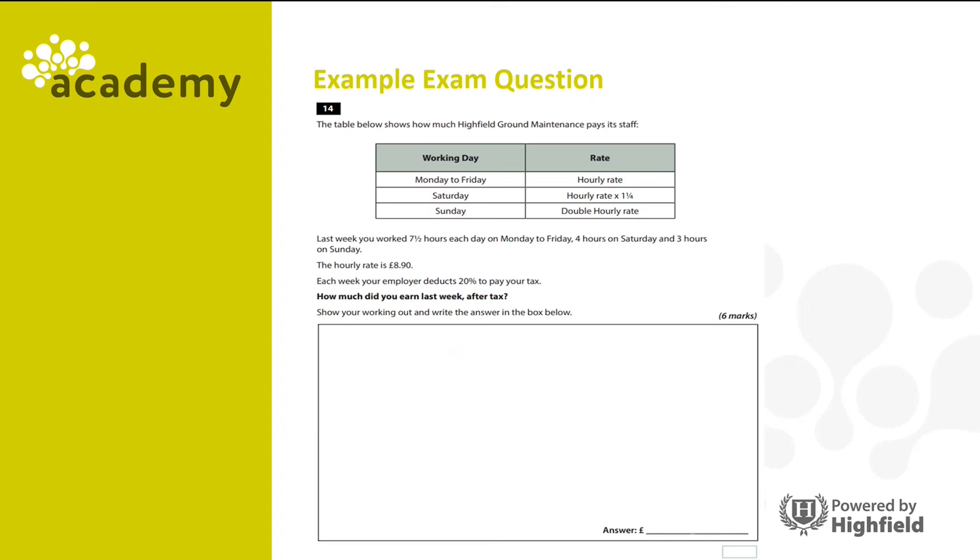Now let's look at an example question you might get on an exam. The table below shows how much Highfield Ground Maintenance pays its staff. You can see there's three different rates. Last week you worked seven and a half hours each day on Monday to Friday, four hours on Saturday and three hours on Sunday. The hourly rate is £8.90. Each week your employer deducts 20% to pay for your tax. How much did you earn last week after tax? You need to show your working out for this answer. So pause the video again, have a go at answering the question including your workings out, and then press play when you're ready to see the answer.